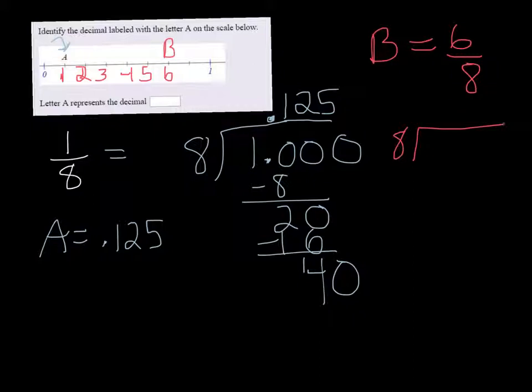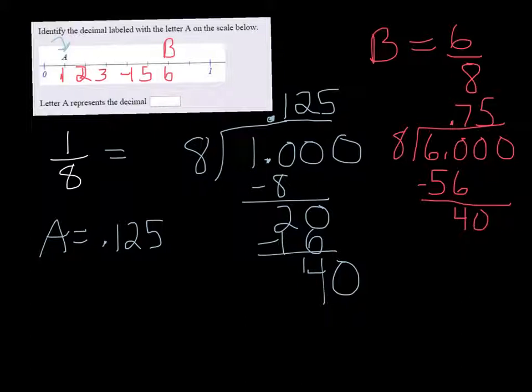Eight into, let's do six point, let's give it some zeros. Alright, eight goes into sixty seven times, which is fifty-six. And then forty five times. So B is six eighths, which is also .75.